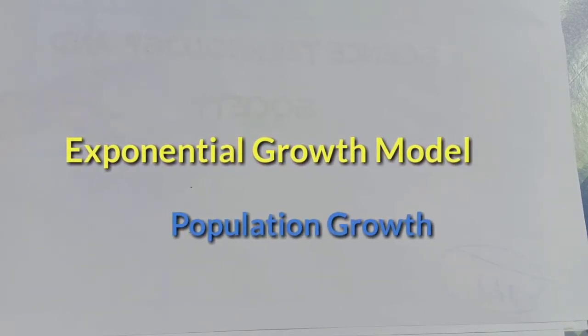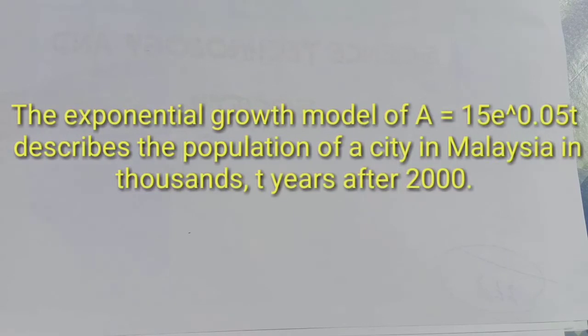Hello everyone. In this video, we are going to solve a problem regarding exponential growth or population growth in mathematics in the modern world. The exponential growth model A equals 15e raised to 0.05t describes the population of a city in Malaysia in thousands, t years after 2000.